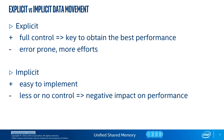Implicit data movement requires less effort to get an application to take advantage of device local memory, as the runtime does a lot for us. It reduces the possibility of introducing errors since the runtime will automatically identify when and how much data must be transferred. The drawback is that the programmer has less or no control over the runtime behavior, and in some cases it may not move data in an optimal way, negatively impacting program performance.